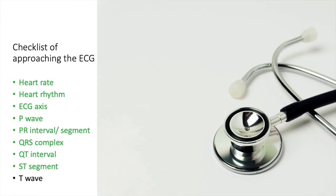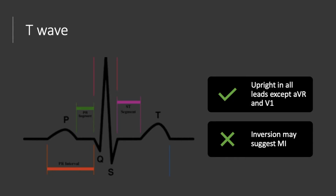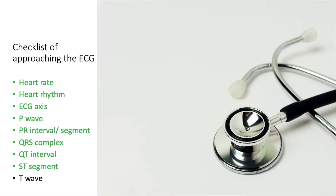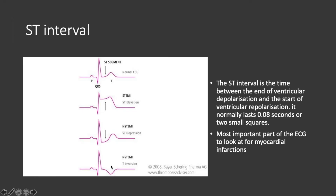The final aspect is the T-wave. The most important thing to know is that the T-wave can either be upright or inverted. A normal T-wave should be upright in all leads except AVR and V1. So if it's inverted in V1, that's absolutely normal. If it's inverted in any other leads other than AVR or V1, it may actually suggest an NSTEMI.